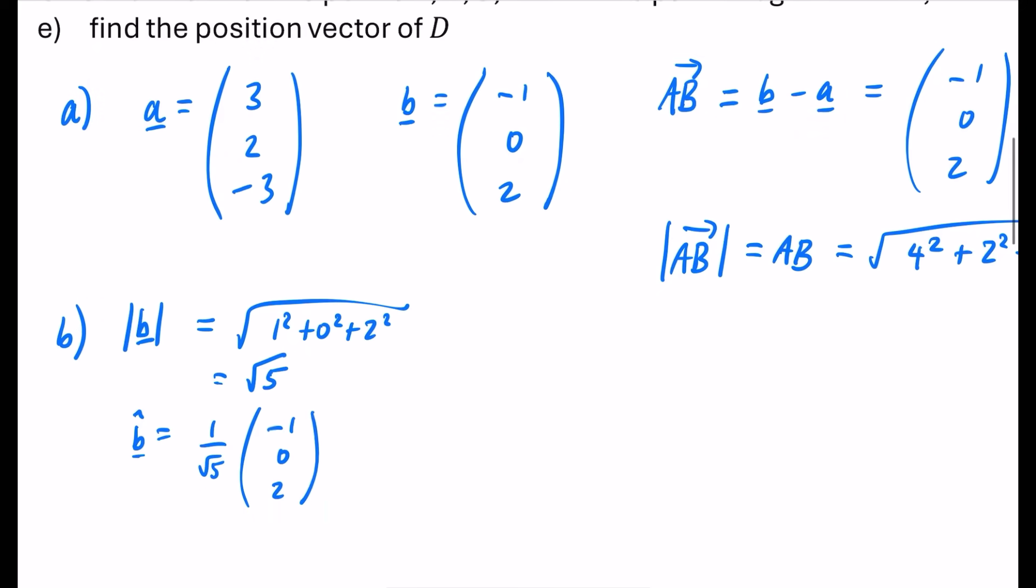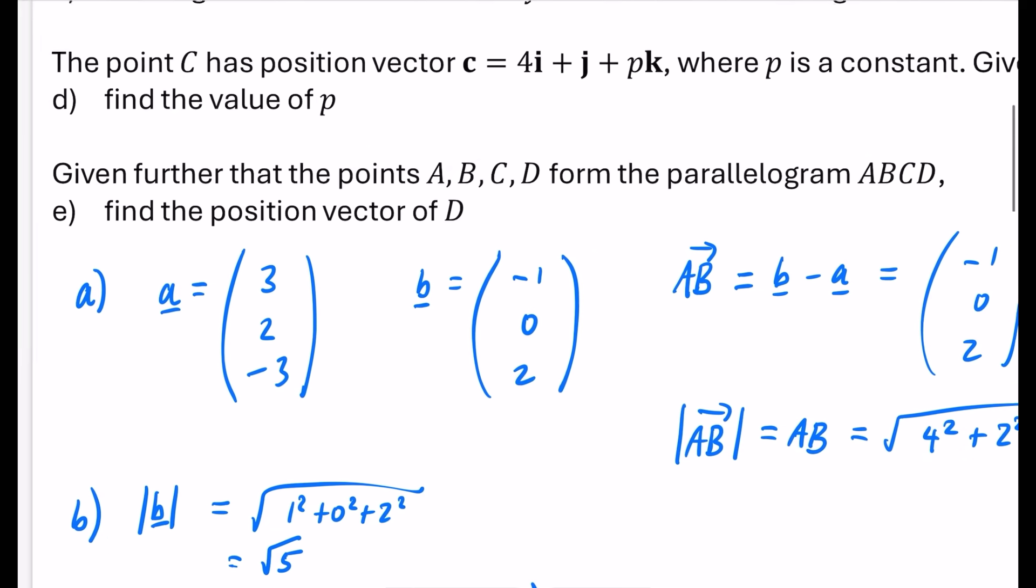So if I now want to write the unit vector B, it just means it's going to be 1 over the square root of 5 multiplied by the minus 1, the 0, and the 2. If you wanted to write this with the 1 over root 5 inside the bracket, you could write it as minus 1 over root 5, 0, and then 2 over root 5. If you wanted to rationalize the denominators, you could rationalize the denominators. If you wanted to write it as i, j, and k notation, you could do that. But any of these three answers that we've got here would be accepted.